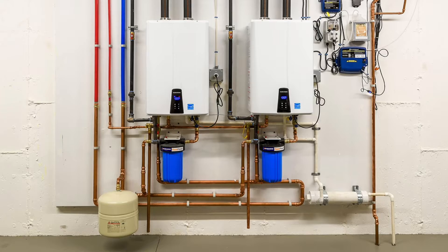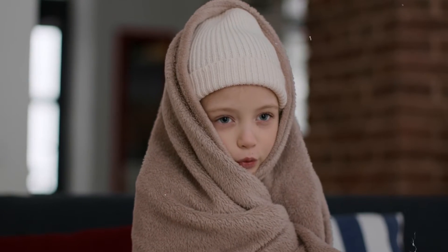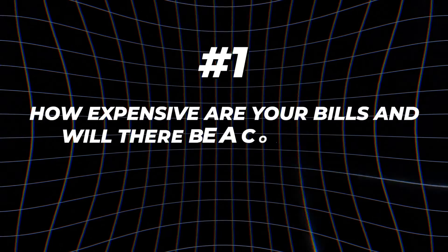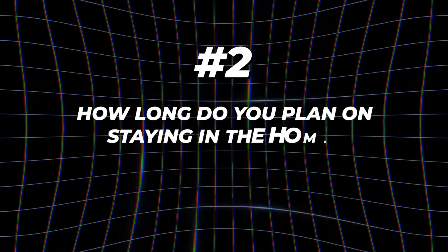One benefit of a modulating combi boiler — combi being short for combination — is that it is also a built-in tankless water heater, handling both space heating and domestic hot water for showers, etc., replacing the need for a separate water heater. This increases efficiency, but the downside is that if the combi boiler goes out, you lose both space heating and hot water. The bigger considerations are how expensive your bills are, whether there will be cost savings, and how long you plan on staying in the home, because the savings will add up over time.